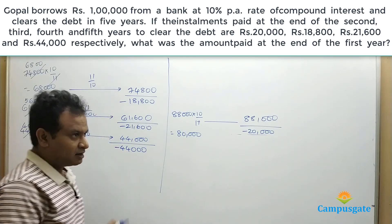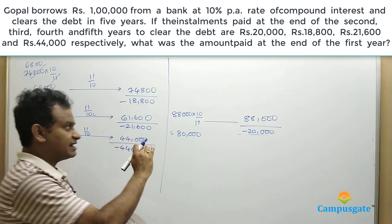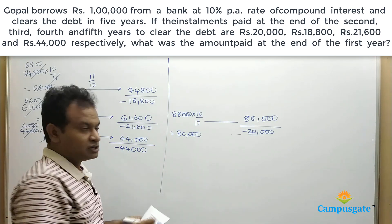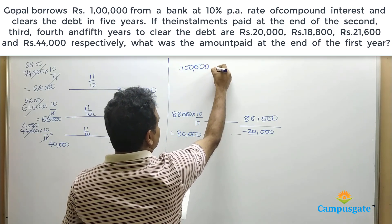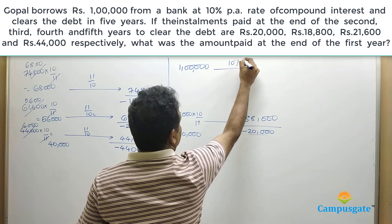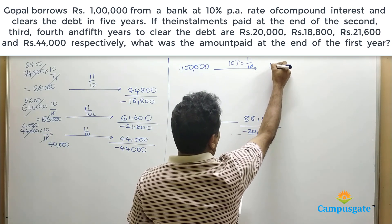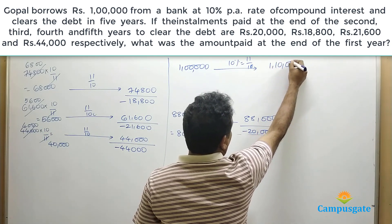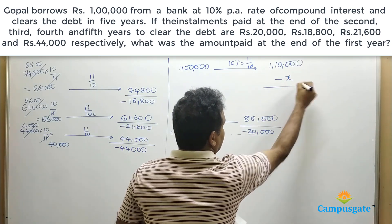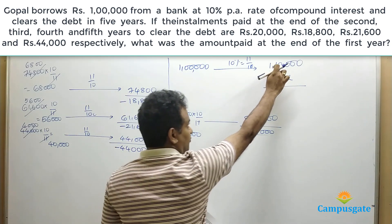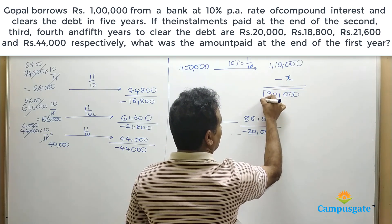This 80,000 is the amount at the beginning of the second year. The total loan borrowed is 1 lakh rupees. At 10% interest, 1 lakh multiplied by 11 by 10 becomes 1,10,000 at the end of the first year. After paying something, the principal became 80,000. So he must have paid 1,10,000 minus 80,000, which equals 30,000 at the end of the first year.